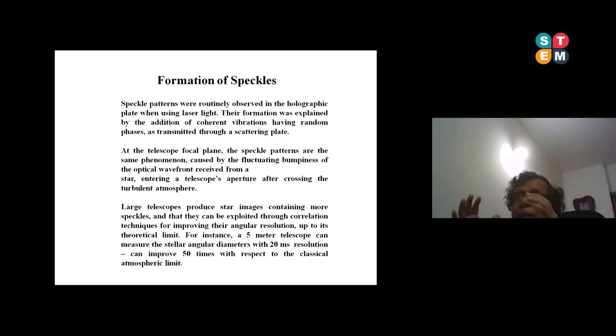So the sizes are - sorry, this is lambda by r0 whole square. Lambda by d whole square becomes d by r0, d the size of the mirror, and r is the size of the eddies. So d by r whole square means if you have a one meter telescope you will have 100 speckles, if you have two meter telescope you will have 400 speckles, if you have 10 meter telescope like Keck you will get about 10,000 speckles.